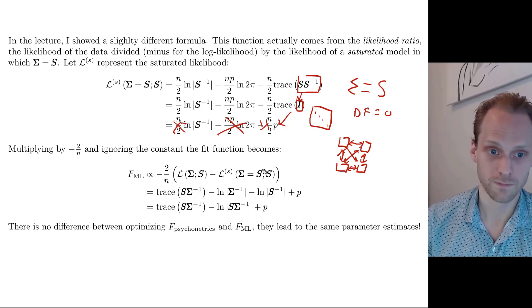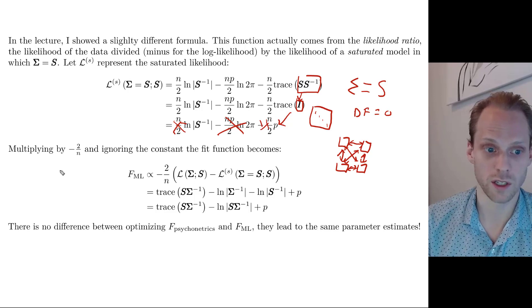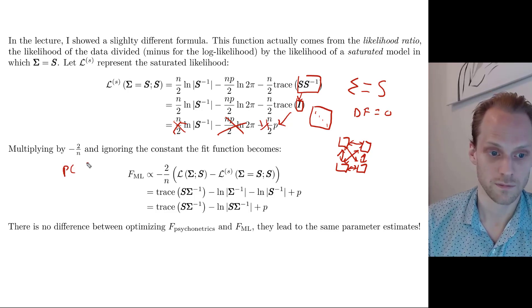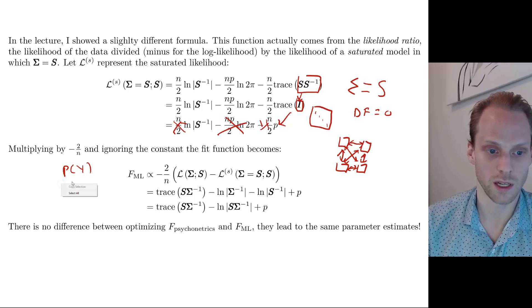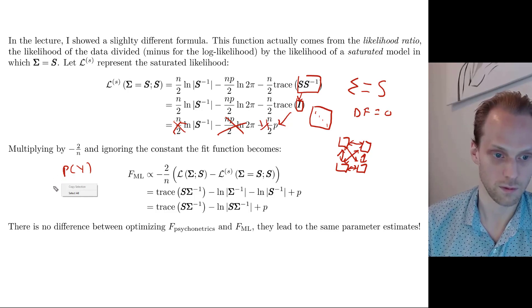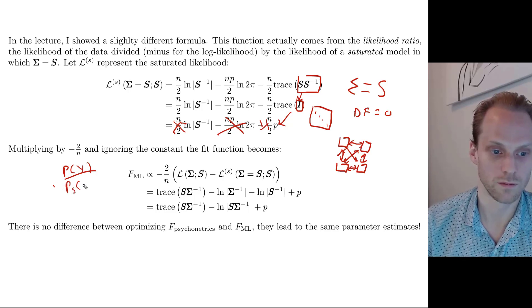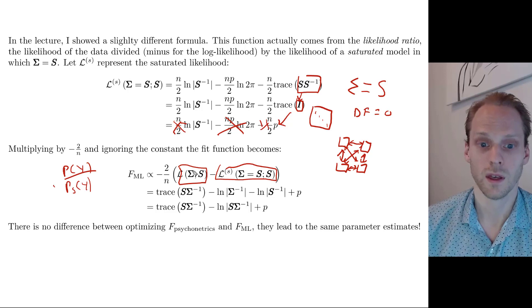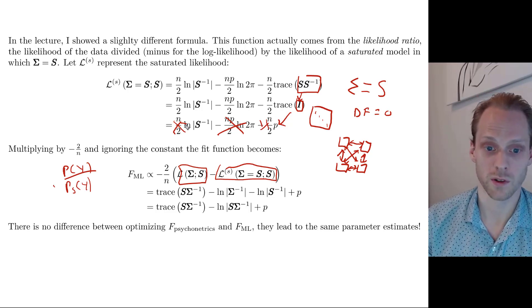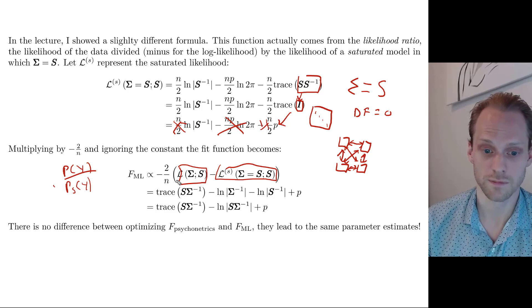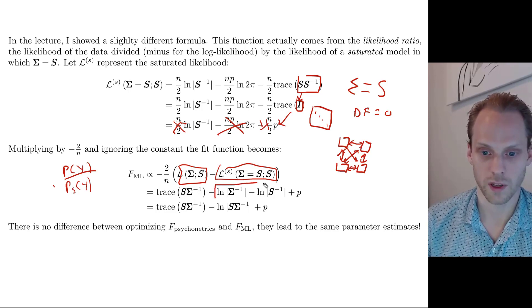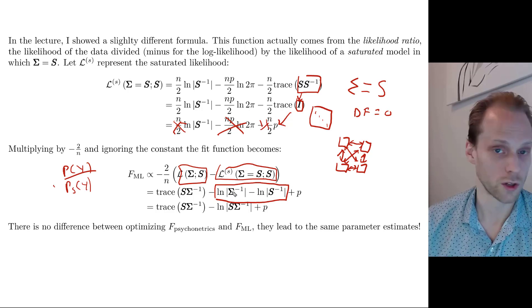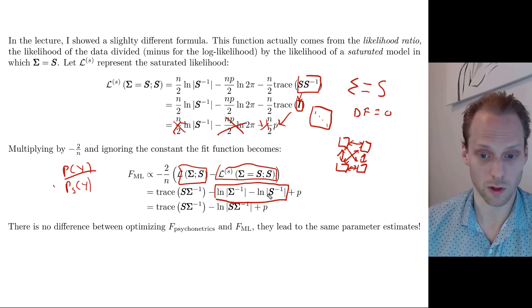Then if you take the difference. So in the log terms, the ratio is the difference. This is the probability of the data divided by the probability of the data in the saturated model. In log terms, that becomes a difference. So the likelihood of the data minus the likelihood of the saturated model. And then we simply take the expression I had before and we subtract this expression here. Then we're left with this. Then all we have here is this log determinant of sigma inverse minus log determinant of s inverse. And with a bit of algebraic magic and also some properties of the determinants, we can write it as this. And that's exactly what I showed in the lecture as well.